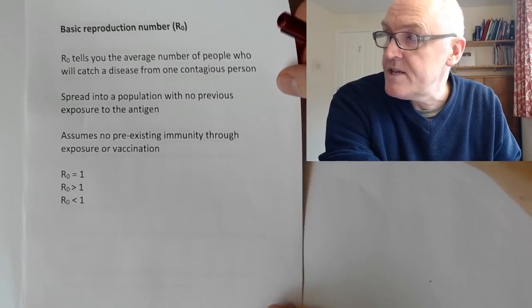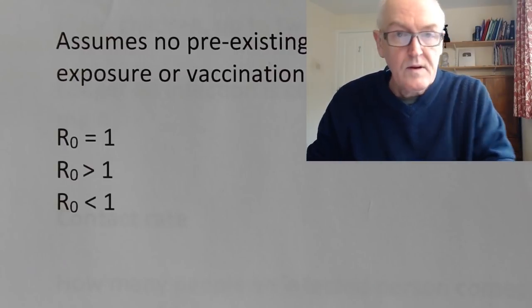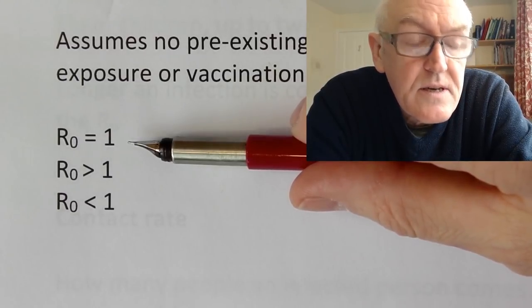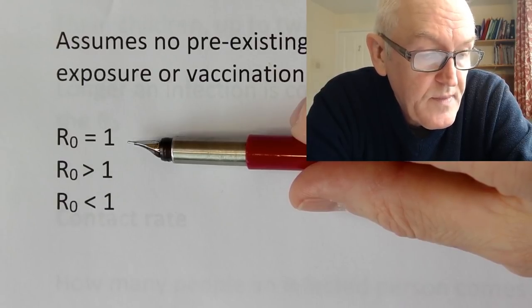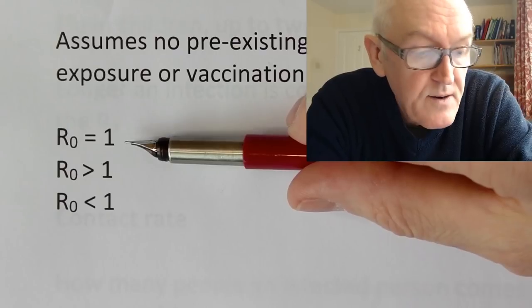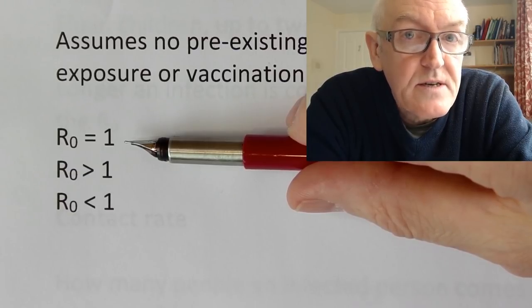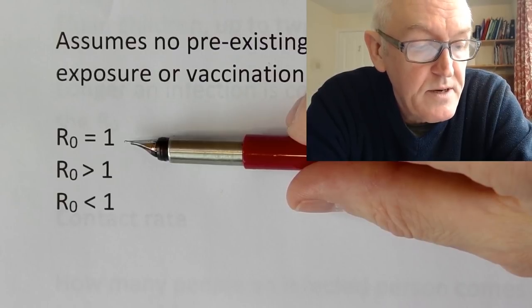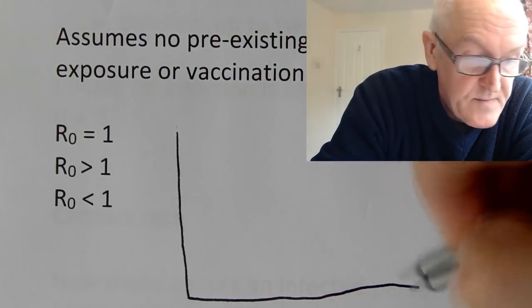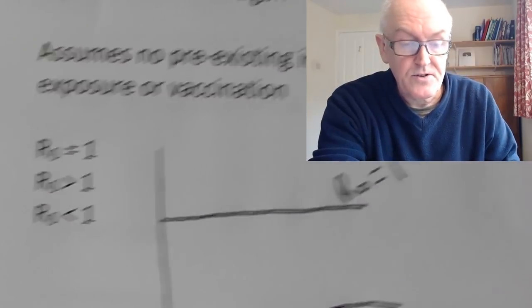A very important concept is whether the R0 is greater than or less than one. If R0 equals one, each infected person is infecting one other person — they replace themselves with one other infected person. That means the number of cases will stay constant. The number of cases are not increasing when R0 equals one.